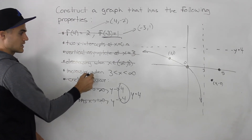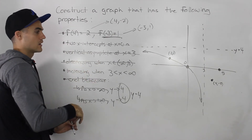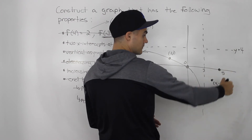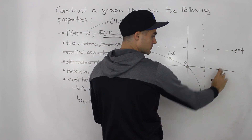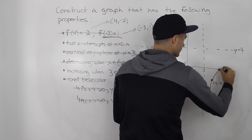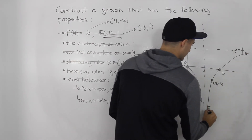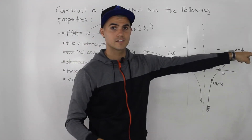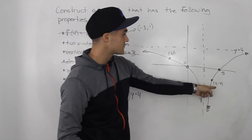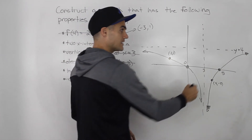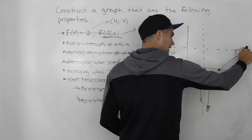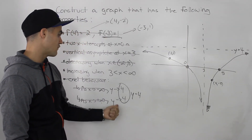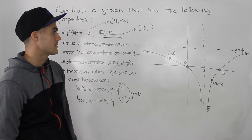Now we need the function to be increasing when x is between 3 and positive infinity — meaning the y values are going up as we read left to right. Taking into account the vertical asymptote, the horizontal asymptote at y=4, and the two points, the function would look something like this. As we read from left to right, it's increasing from x=3 all the way to positive infinity. It goes through the points (4, -2) and the x-intercept at 5, and approaches y=4 as x goes to positive infinity, getting closer and closer but never hitting it.